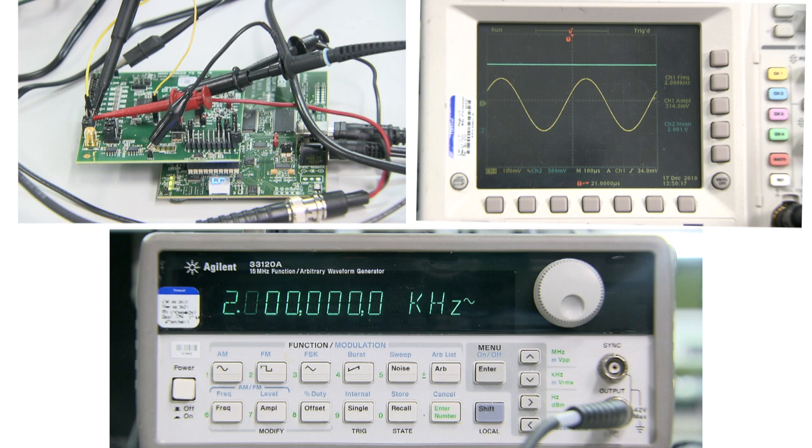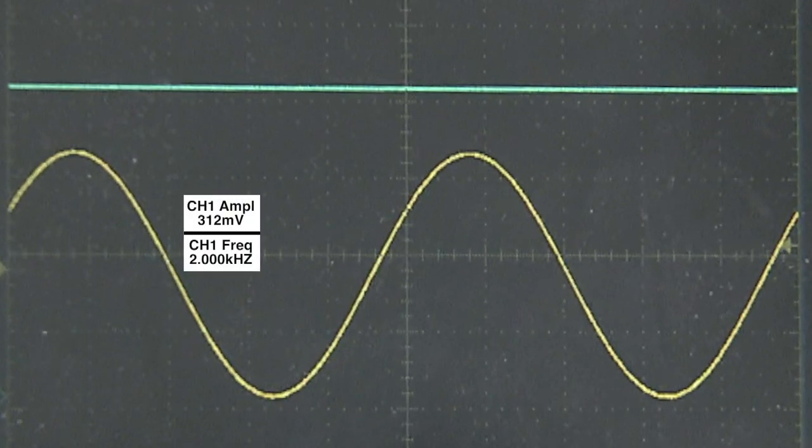We will be showing a live demonstration using the ADS-1299 EVM, oscilloscope, and waveform generator. The waveform generator will be providing a 2 kHz AC input signal with an amplitude of roughly 312 millivolts.